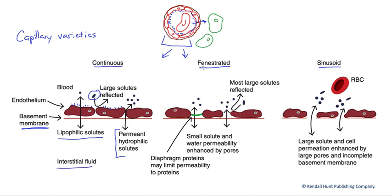Fenestrated capillaries exist where we need much enhanced permeability to water and small solutes. The pore size between the endothelial cells is larger, and we often have diaphragms — protein meshes that connect those cells, acting like a sieve to limit loss of proteins. Those proteins are once again reflected by the capillary wall and retained within the bloodstream. We find these capillaries in places like the kidney or intestines where large amounts of small solutes and water move across the capillary wall.